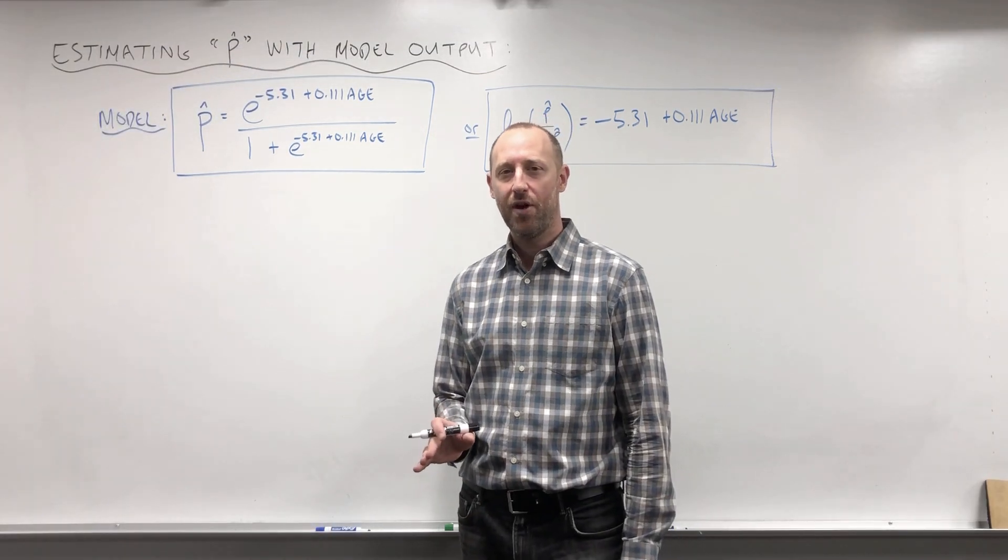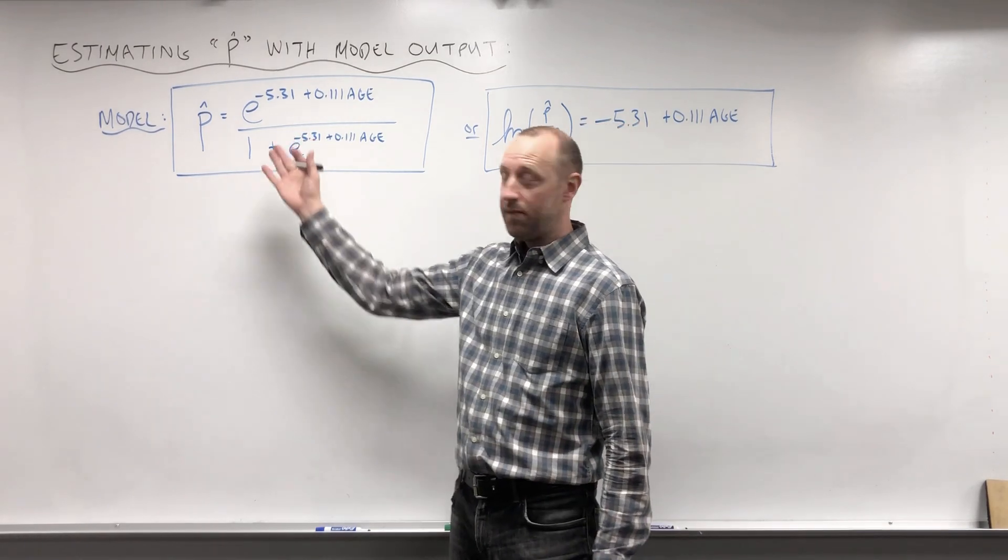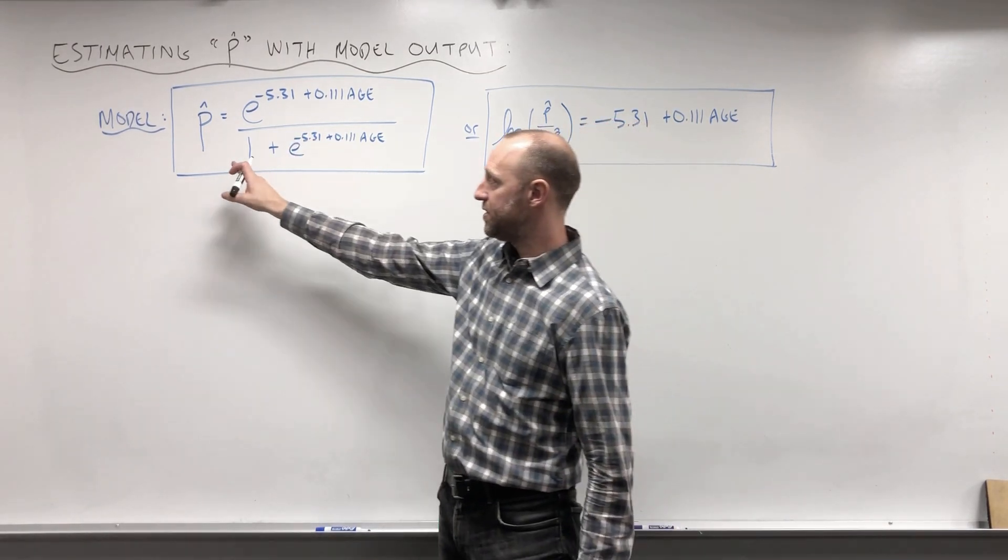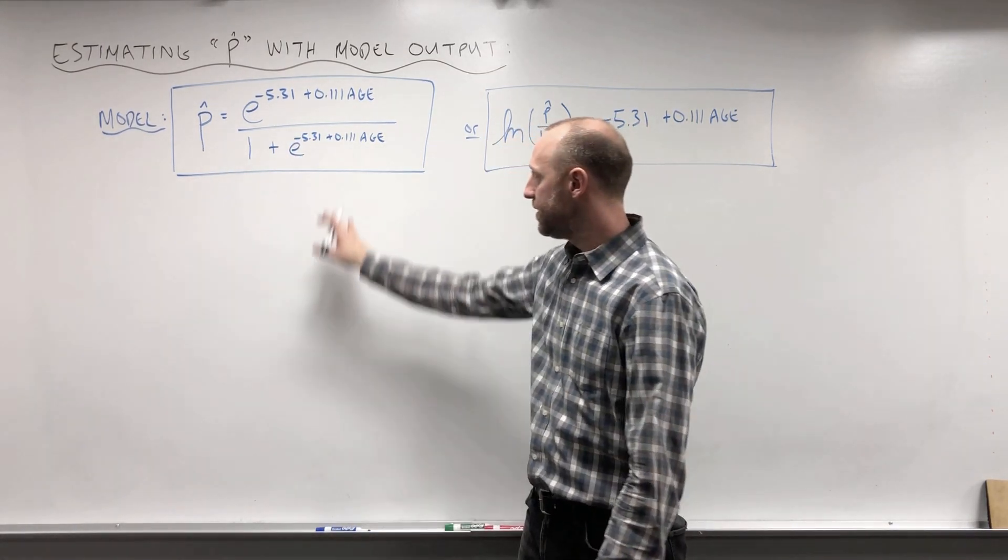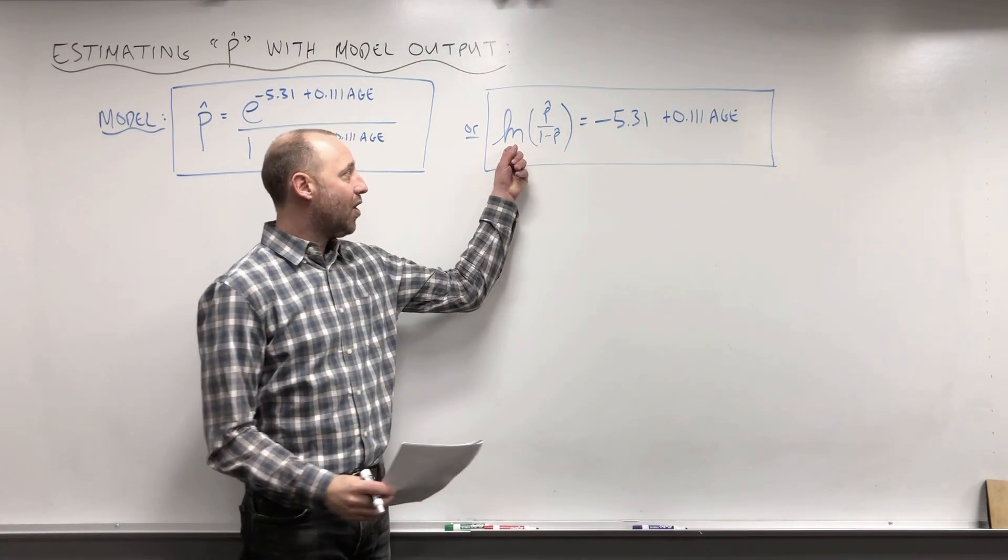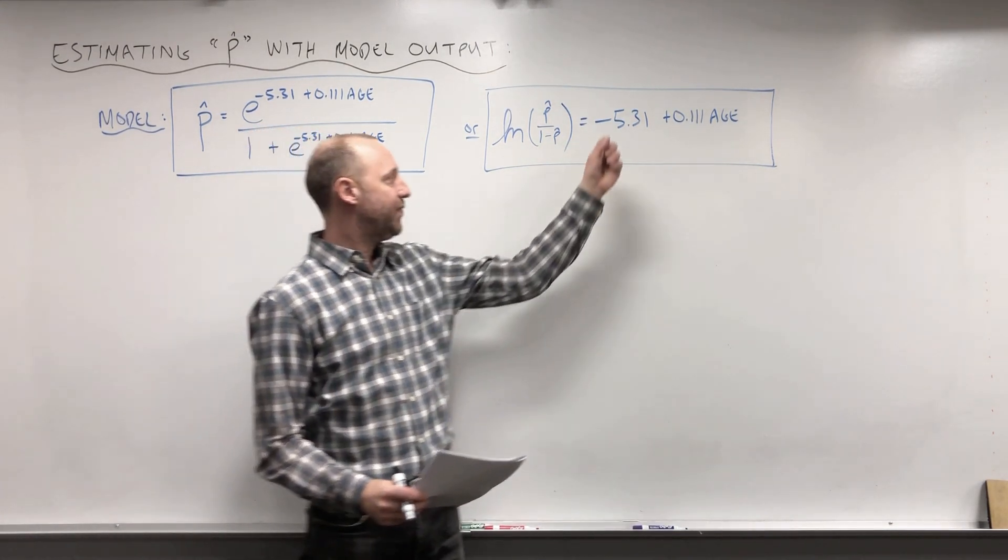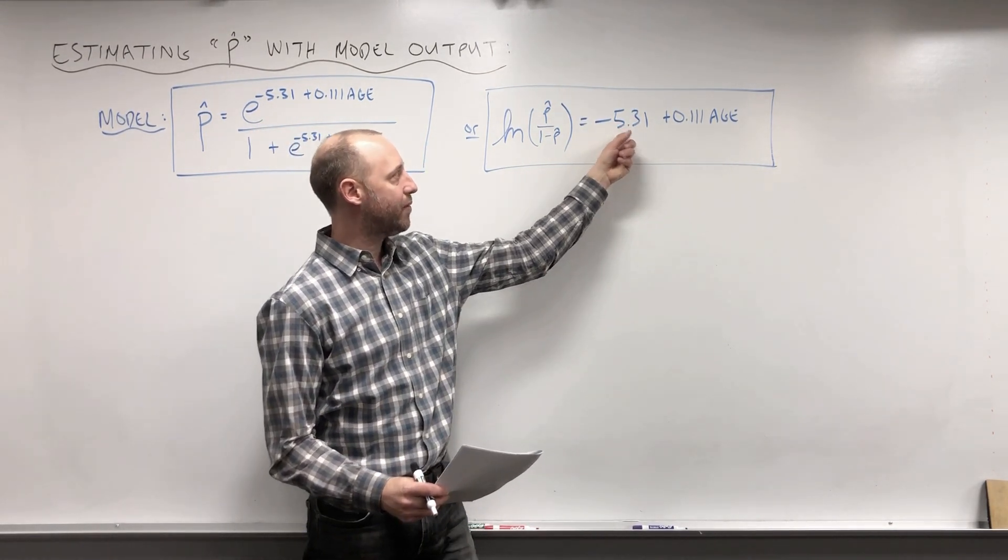We fit a logistic regression model to the coronary heart disease data and ended up with the model here, expressed on the scale of probability of coronary heart disease. This is the logistic function, or the log of the odds of coronary heart disease as a linear function of the x's. The intercept was -5.31, the coefficient for age was 0.111.